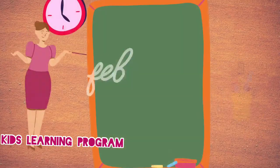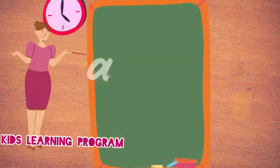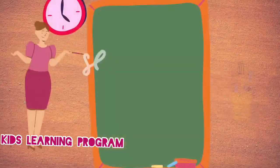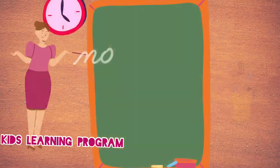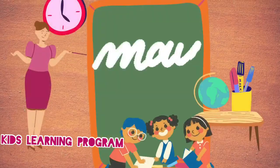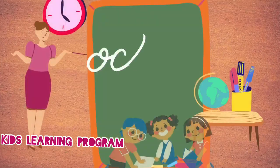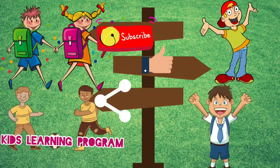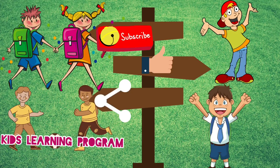January, February, March, April, May, June, July, August, September, October, November, December. Now let's learn them even more quickly: January, February, March, April, May, June, July, August, September, October, November, December. Hope you have liked this video. Like, share, and subscribe for more videos. Thank you. Allah Hafiz.